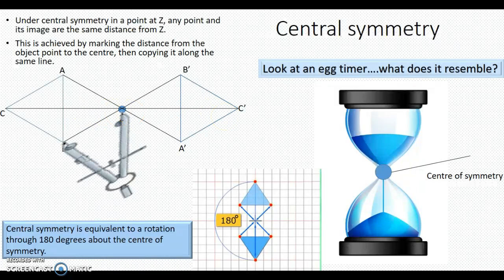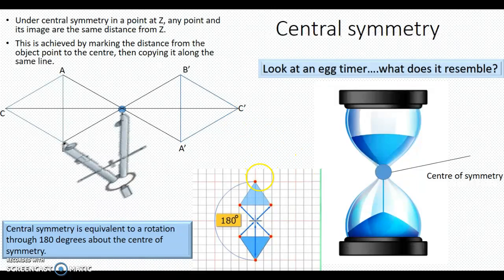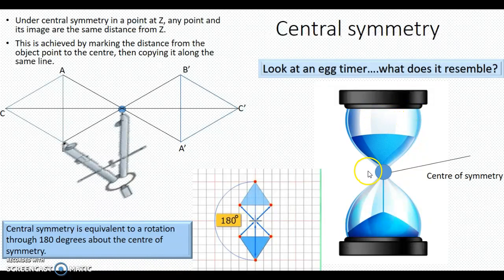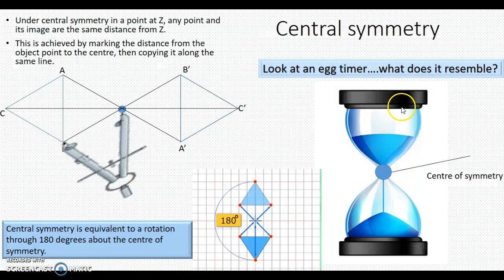But central symmetry is also an example of a rotation to 180 degrees about the center of symmetry, as you can see here in our diagram at the bottom. This is also seen in the egg timer, which also resembles central symmetry. The shape on the top is copied down to the bottom, or it is rotated about the center of symmetry.